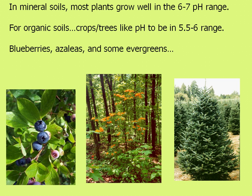In mineral soils — soils without a lot of organic material — most plants grow well in the 6 to 7 pH range. Here in the mountains of Western North Carolina, we have much more organic soils, and trees and crops in these areas prefer a more acidic pH. Species such as blueberries, azaleas, and evergreens like Fraser fir have adapted to low pH soils.